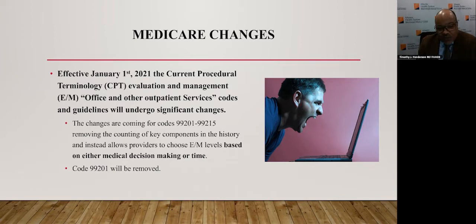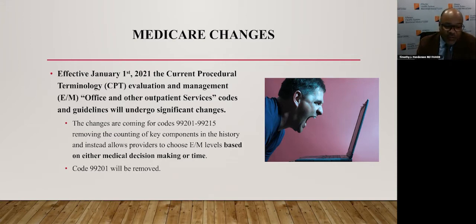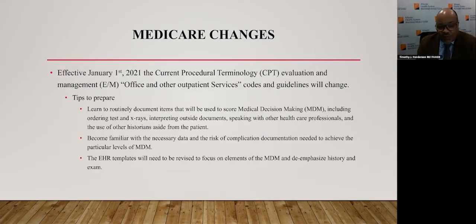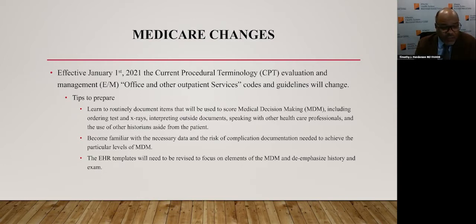Effective January 1, 2021, the CPT Evaluation and Management office and other outpatient services codes and guidelines will undergo significant changes. The changes affect codes 99201 through 99215, removing the counting of key components in the history and instead allowing providers to choose E&M levels based on either medical decision making or time. The code 99201 will be removed. Tips to prepare: learn to routinely document items used to score medical decision making, including ordering tests and x-rays, interpreting outside documents, speaking with other healthcare professionals, and using other historians aside from the patient. EHR templates will need to be revised to focus on elements of medical decision making and de-emphasize history and exam.